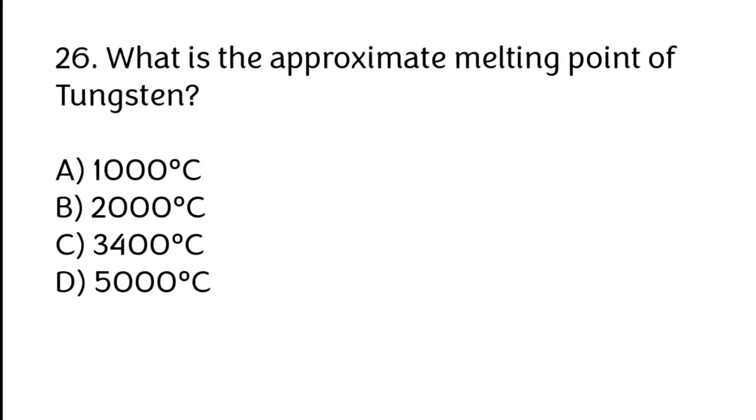What is the approximate melting point of tungsten? Correct answer is C. 3,400 degrees Celsius.